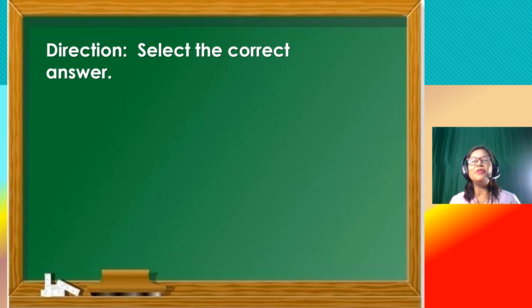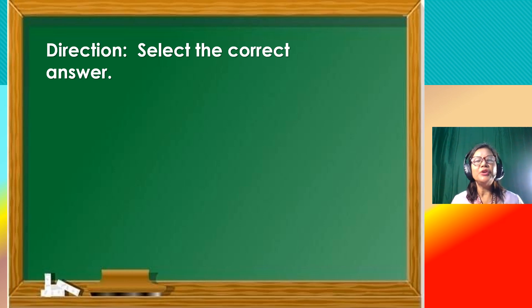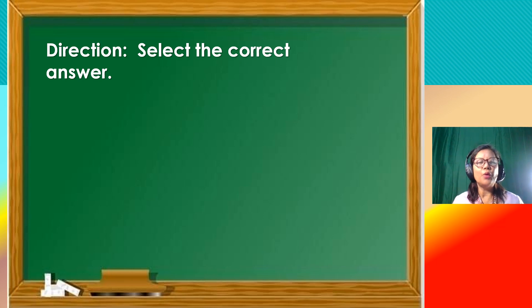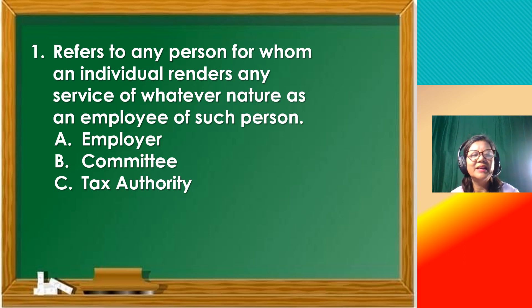Before we go further, let us have a review. Please get your pen and a piece of paper — you will be given 2 seconds to answer each question. Here is the direction: you are going to select the correct answer. Number 1 refers to any person for whom an individual renders any service of whatever nature as an employee of such person.